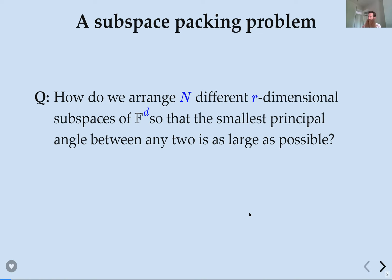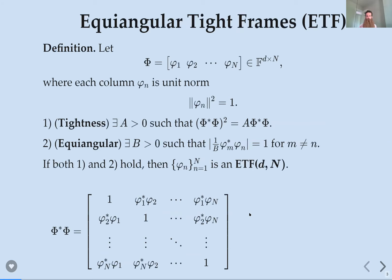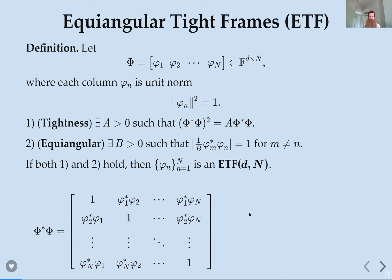The question I want to look at is: how do we arrange n different r-dimensional subspaces of either R^d or C^d — so F^d — so that the smallest principal angle between any two is as large as possible? In my mind, this means subspaces that are as spread out in space as possible. I've worked on this problem for a long time, but in the r=1 regime, where we have a nice answer to that question.